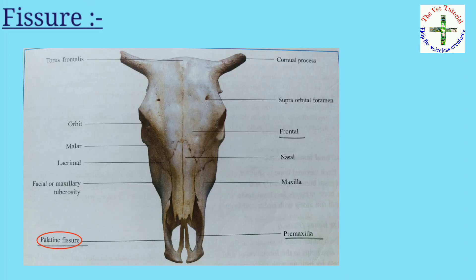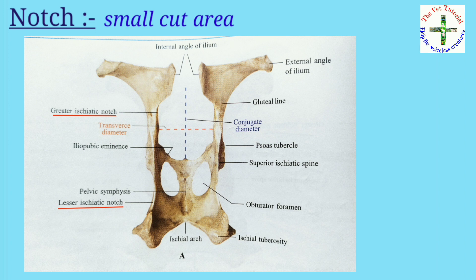Then cornu — it is a curved horn-like process. Example: found in the skull, frontal bone, and hyoid bone. Then fissure — it is a small slit-like area. Example: found in the skull and palatine bone. Then notch — it is a small cut area. Example: found in the scapula as the glenoid notch, and in the coccyx as the sciatic notch.